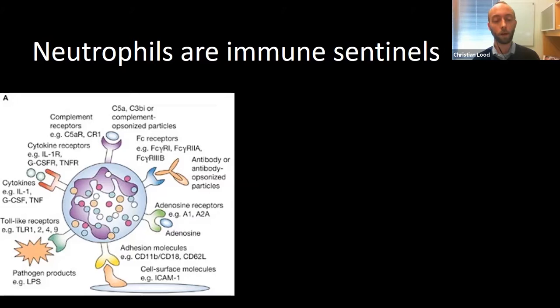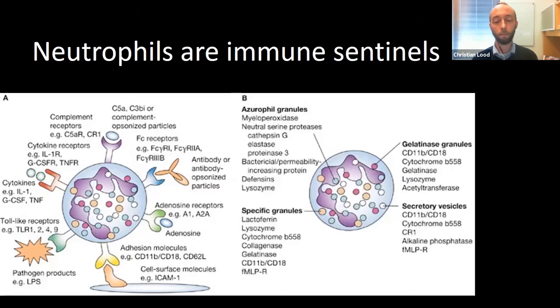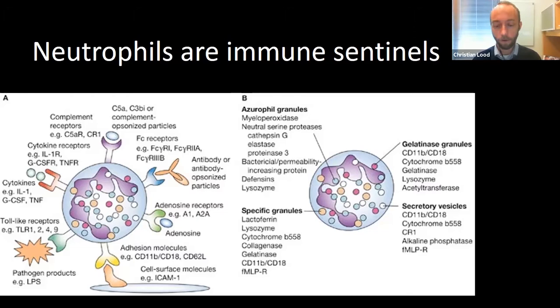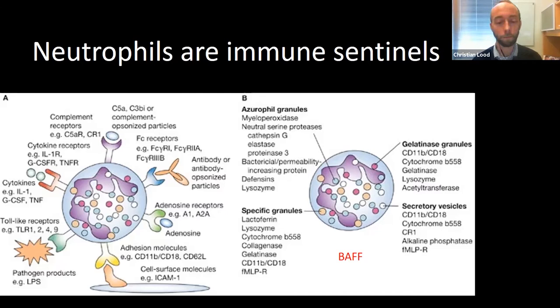Neutrophils can sense pathogen or danger-associated molecular patterns. Once they do, they release many intracellularly stored granules containing antimicrobial proteins and peptides, as well as immune receptors. One key component not noted on this slide is a protein called BAFF — B-cell activating factor — which can support B-cell proliferation and survival. This protein BAFF released from neutrophils is targeted in lupus by a drug called belimumab, so we already implicate neutrophil-derived molecules in our treatment strategies today.